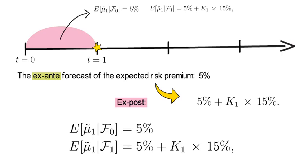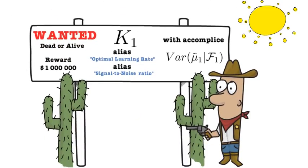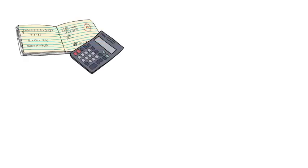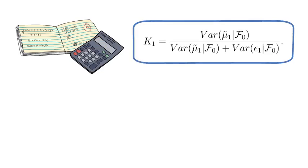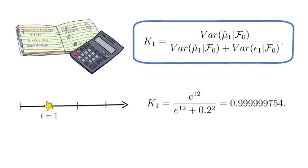Now there are two remaining questions on the table. First, how large is the remaining uncertainty, meaning how large is the conditional variance of μ̃_1 conditional on F_1? Now to keep the video on an intuitive level, I simply tell you that one could show with a bit of algebra that K_1 coincides with the following expression. And for my numerical example, the resulting optimal learning rate in t equals 1 would be e to the 12 divided by e to the 12 plus 0.2 squared, which is basically 1. Numerically, it's 0.9999754.